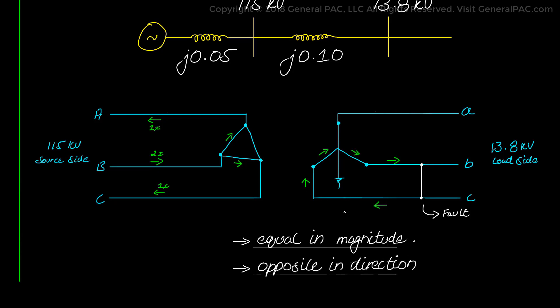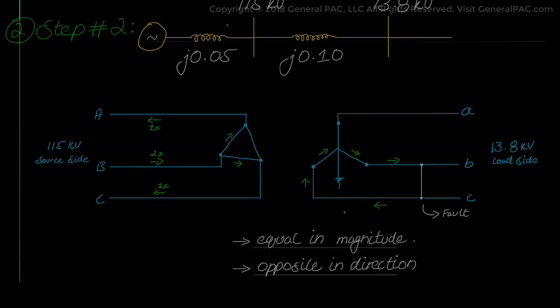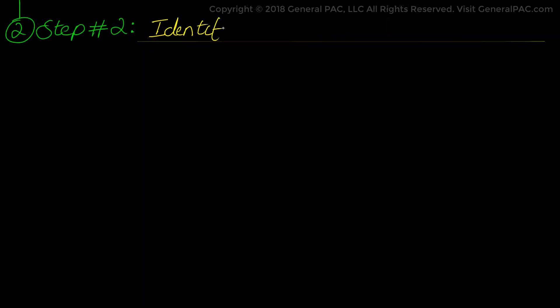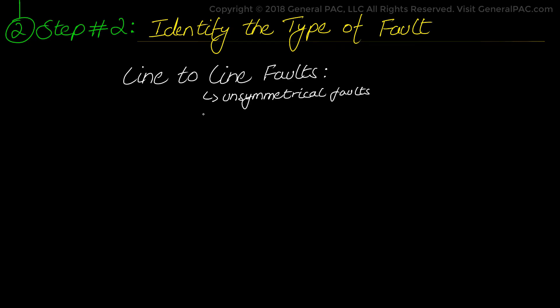Now let us go through the hand calculations and verify this result. Next, we move to step number 2 which asks us to identify the type of fault involved. As mentioned before, we have a line-to-line fault which is an unsymmetrical fault type meaning an unbalanced fault. This type of fault produces sequence quantities, positive and negative sequence components, current and voltage quantities.